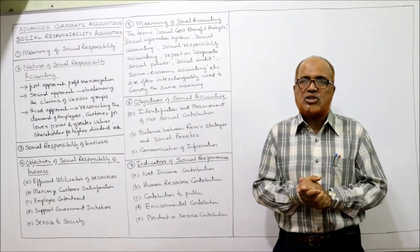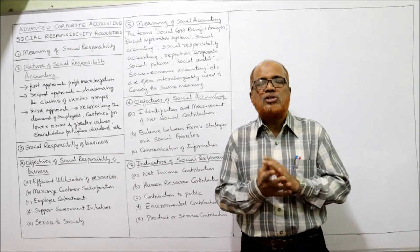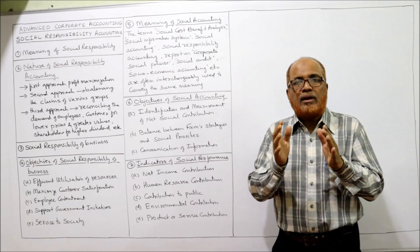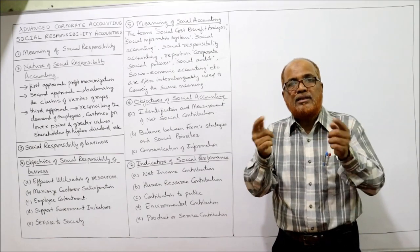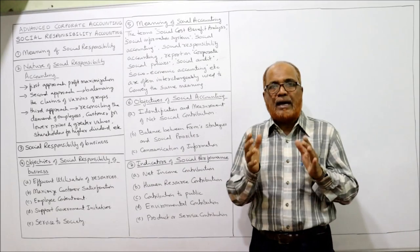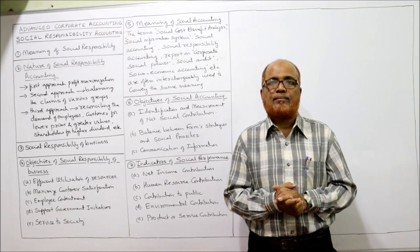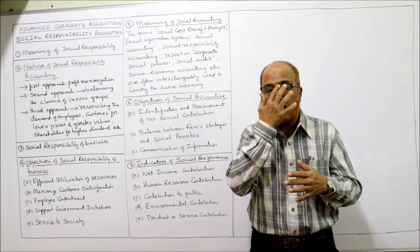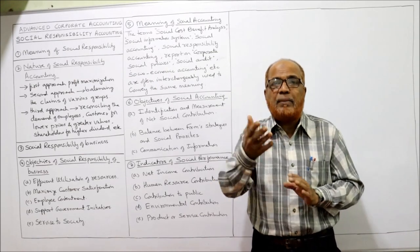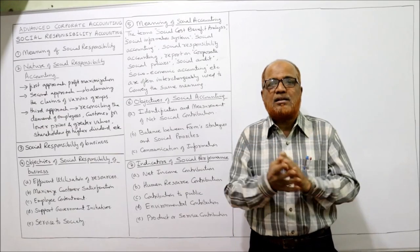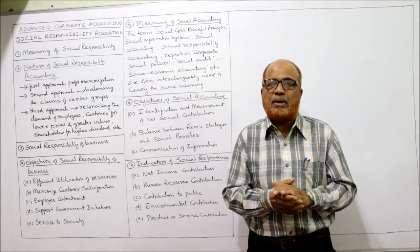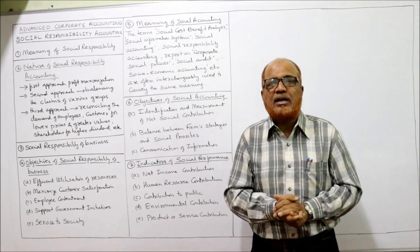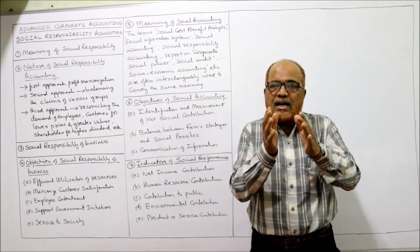Third objective: employee contentment. The employees are the main resource of the organization — the most important resource is human resource. Unfortunately, payment made to employees is often kept at minimum for cost reduction, but this is not correct. Employees should be satisfied — not only through better remuneration, but the employer also has to spend on developing job skills of workers by providing training and various facilities.